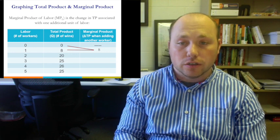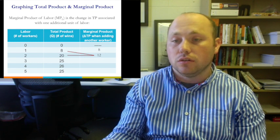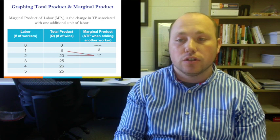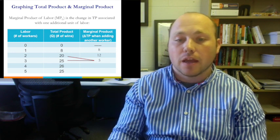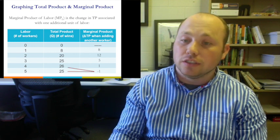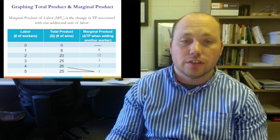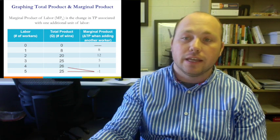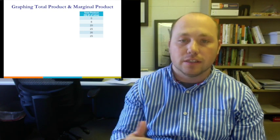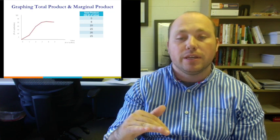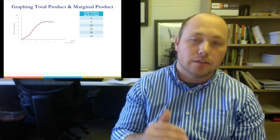Going from 2 to 3 workers, the third worker added 5 more wins. The fourth worker added 1 additional win. The fifth worker actually decreased the number of wins — this is where diminishing returns goes negative. Graphing the same total product data, we see a curve that increases quickly at first, begins to diminish, and then decreases — illustrating diminishing total product.